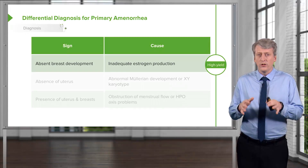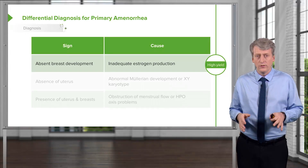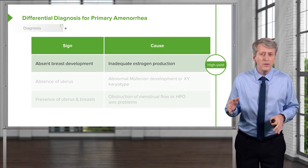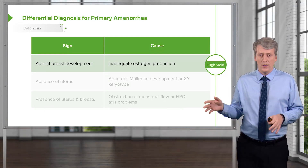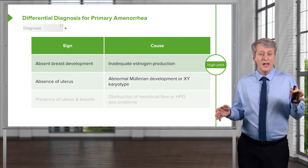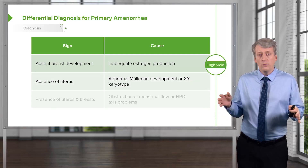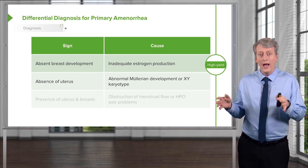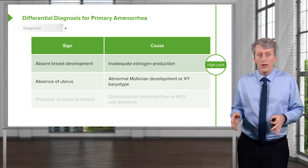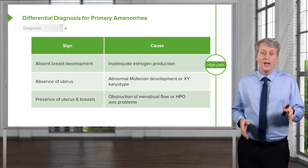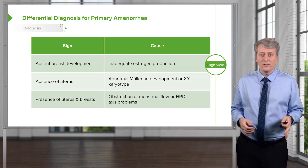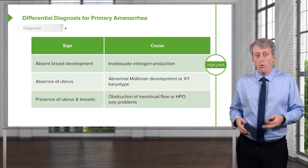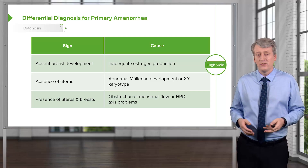The differential diagnosis for primary amenorrhea is important. In a patient with absent breast development, there's probably inadequate estrogen production. In a patient with absence of the uterus, you might suspect abnormal Müllerian development or an XY karyotype in a phenotypic female. In a patient with a uterus and breasts present, you might think about obstruction of menstrual flow or an HPO axis difficulty.